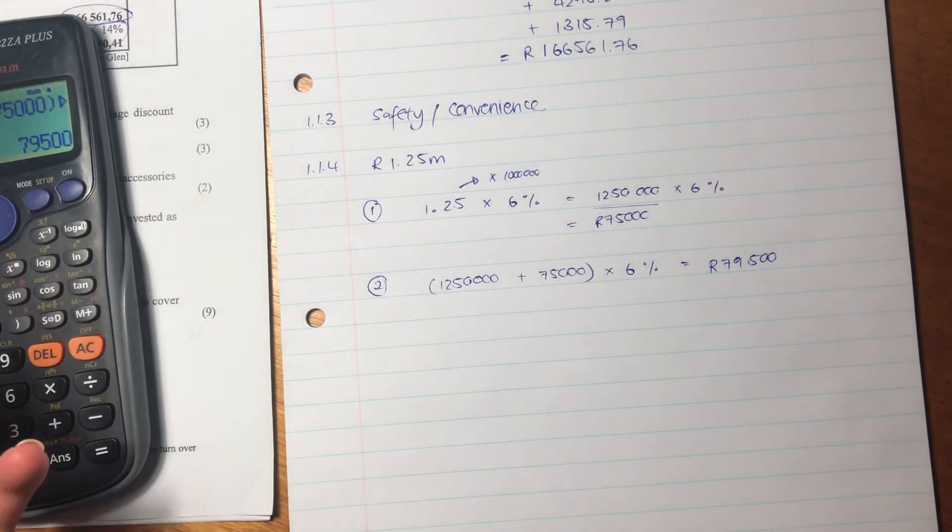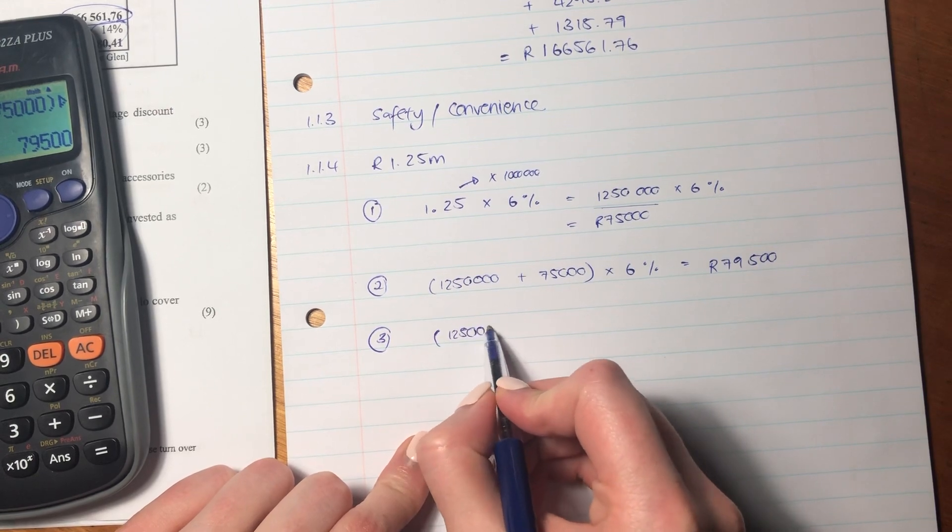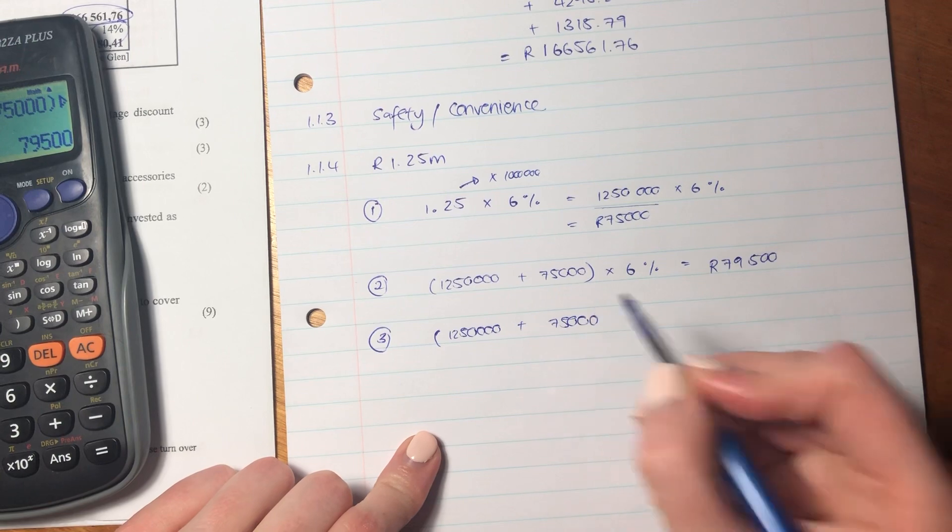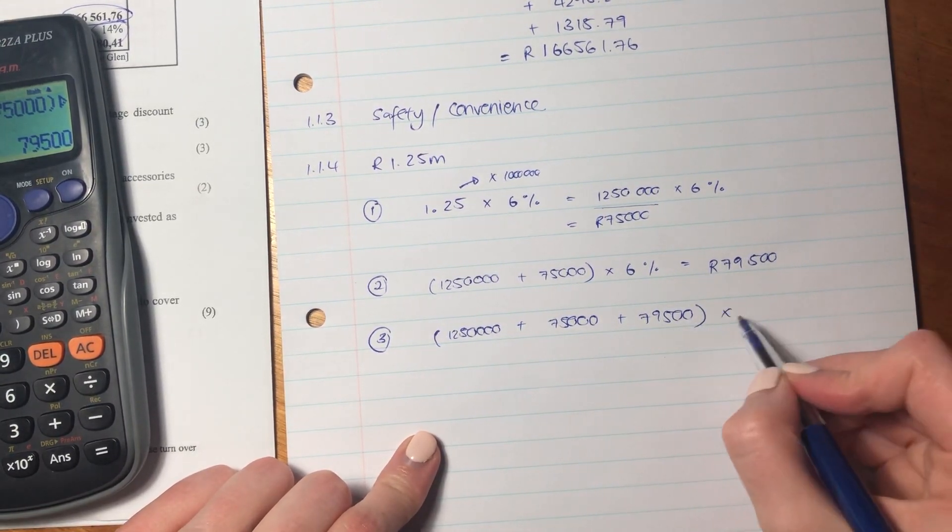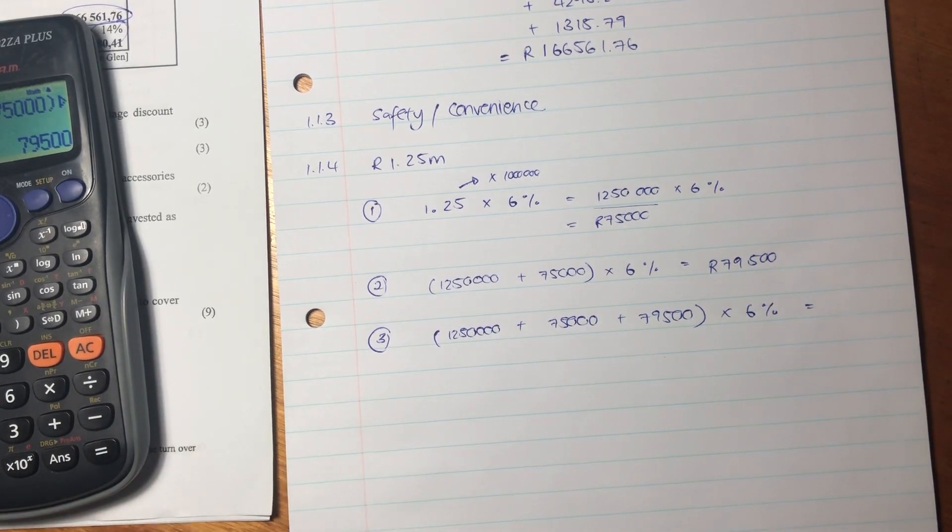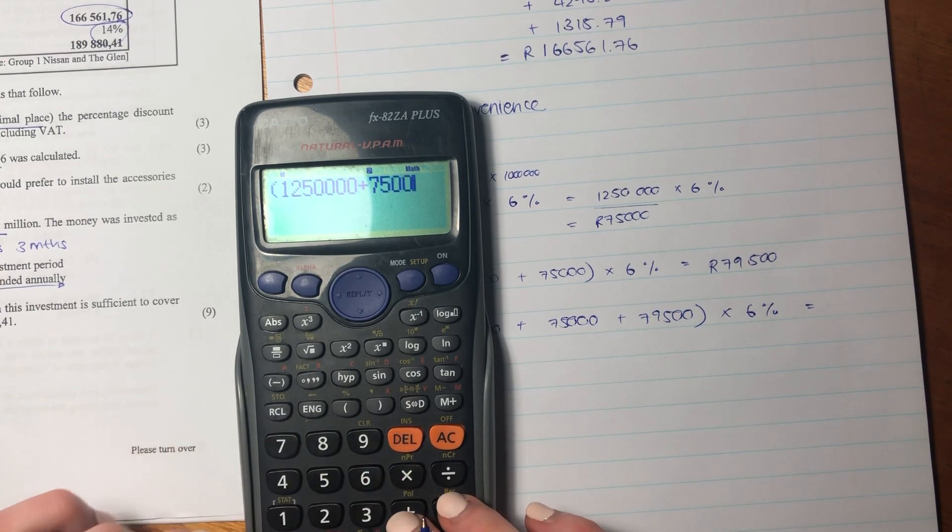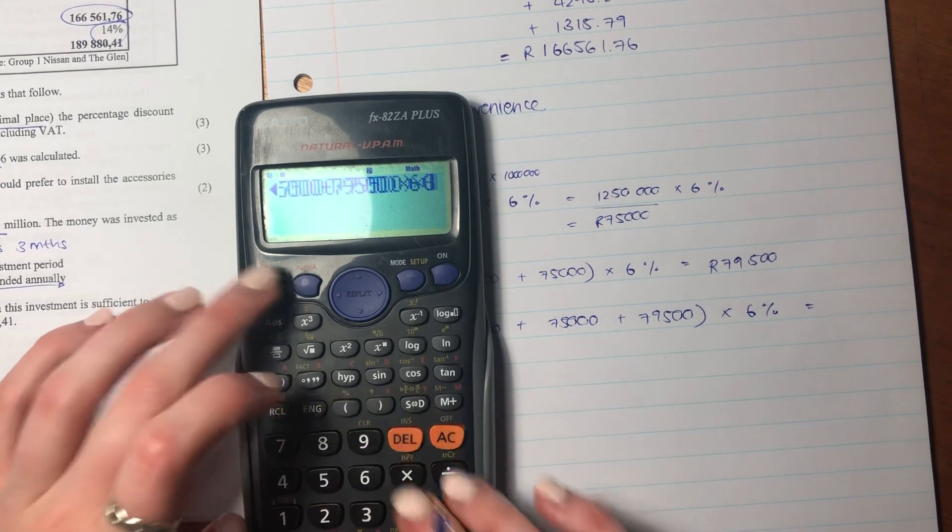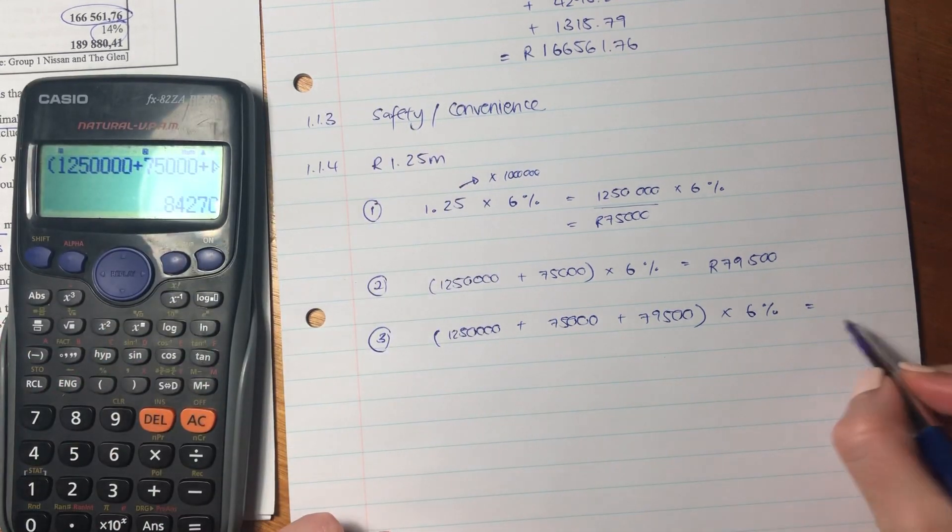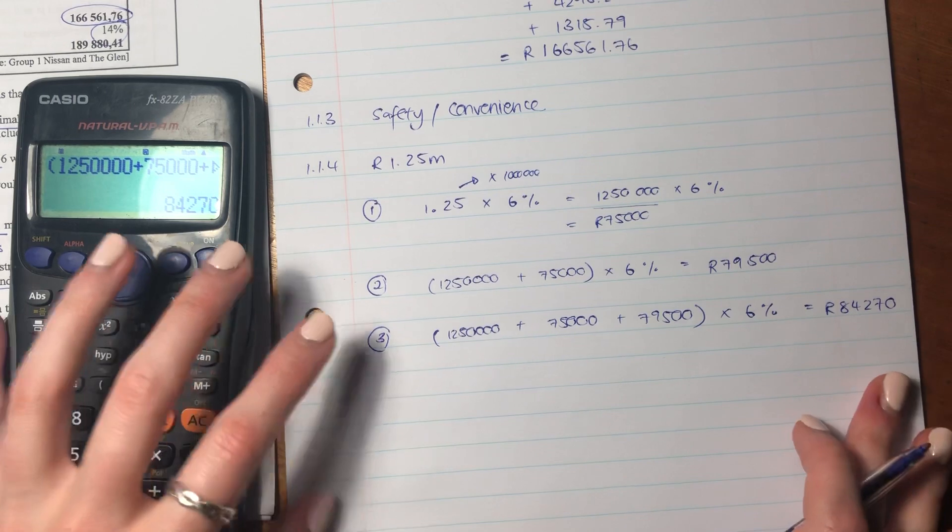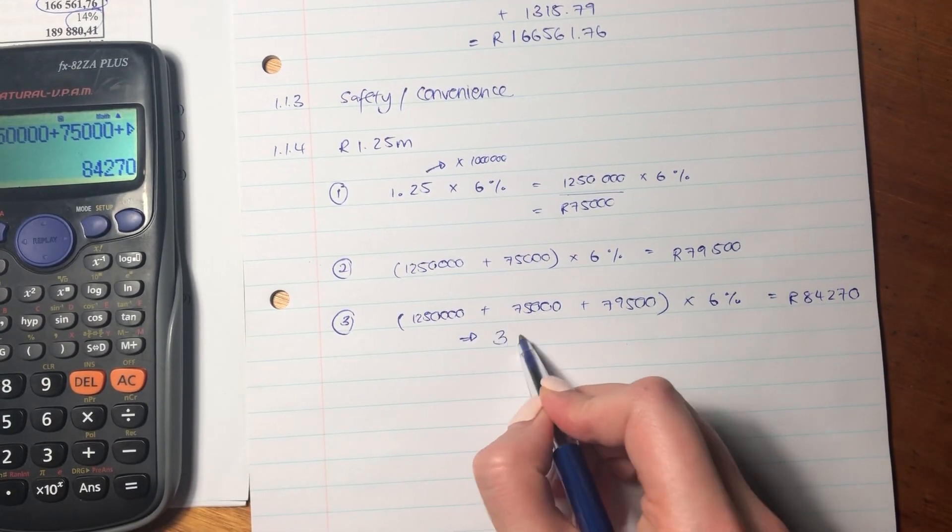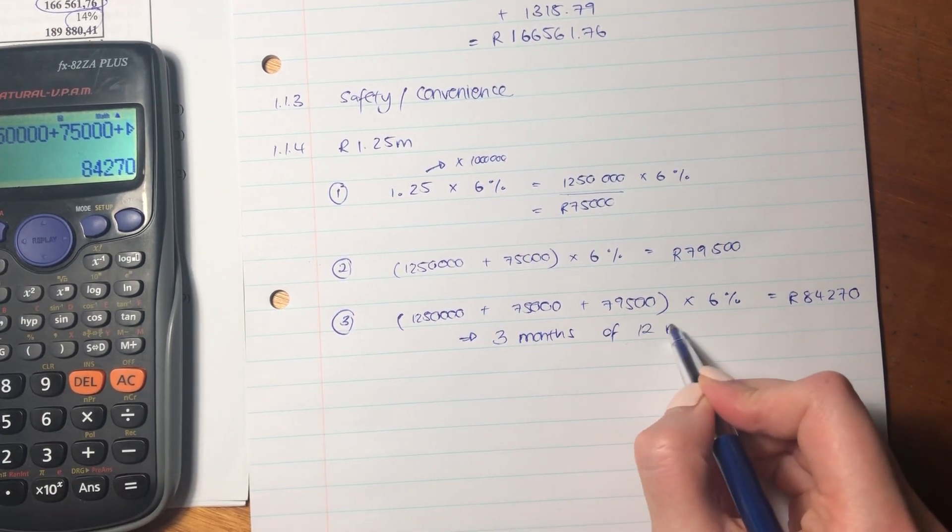Now this is the part where I said that I fundamentally disagree. So now instead of in the third year - so what I'm going to do is I'm going to say imagine she invested it for a full three years. So I know she didn't invest it for a full three years, so don't get all hung up on that, but let's just say she did. So then we're saying she would earn interest on the amount she invested plus the interest she earned in the first year plus the interest that she earns in the second year. So this is saying if she had a full three years. I know she hasn't, but imagine she did. So put that into your calculator: 1.25 plus 75,000 plus 79,500. So she would have earned 84,270. That's how much interest she would have earned. But we know that actually she only earned interest for three months of 12 months.